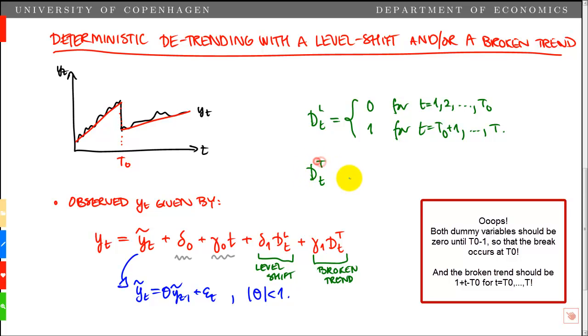Second, dTT, which is our broken trend, is equal to 0 for t equal 1, 2, all the way to t0, and then it is t minus t0 for t equal t0 plus 1, all the way up to capital T. So the first one will take on values 0, then jump and then take on values 1. The second will start to take on values 0 and then it will create a trend starting exactly at this point in time, t0.